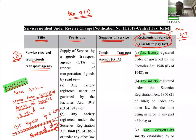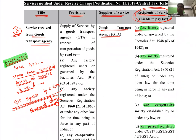Section 9(3) reverse charge के बारे में बोलता है — कौनसी services notified under reverse charge हैं, यह पूरे logic के साथ समझेंगे। Reverse charge मतलब जहाँ पे recipient को GST भरना है। Forward charge में supplier भरता है। जो आपके screen पर दिख रहे notes के format में, जिसको GST भरना पड़ेगा वो last column में listed है — liable to pay the tax।